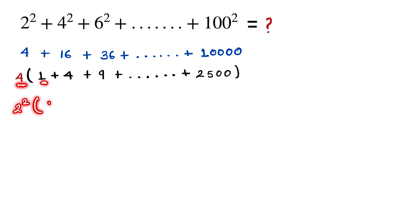So it equals 2²(1² + 2² + 3² + ... + 50²). Now we find the sum of this. The sum of squares of first n numbers is given by the formula.